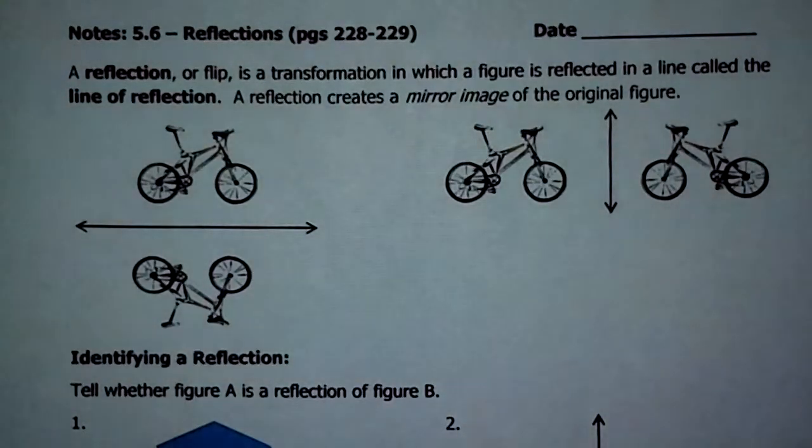It's a transformation in which the figure is reflected in a line called the line of reflection. That makes sense, doesn't it? A reflection creates a mirror image of the figure. So it's like it's facing, looking in the mirror.